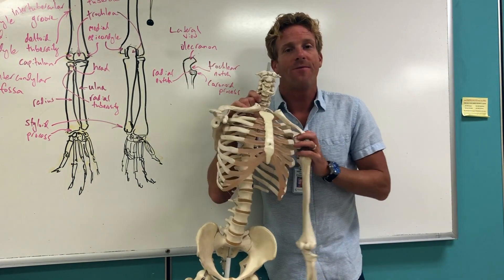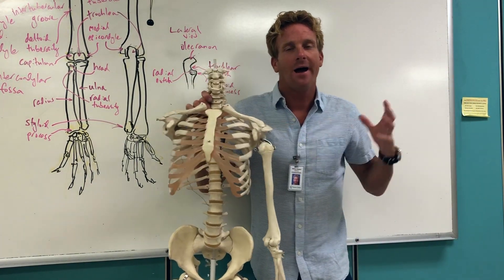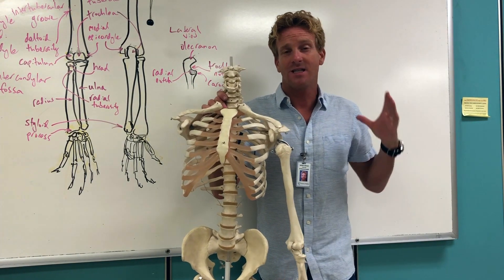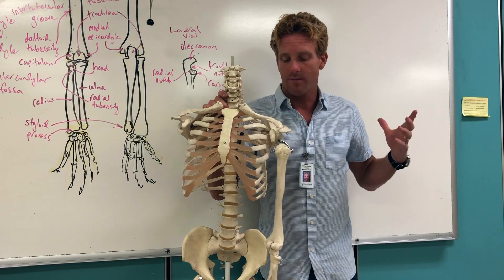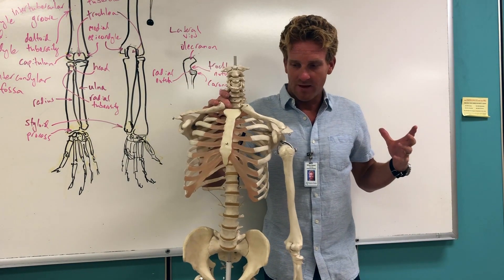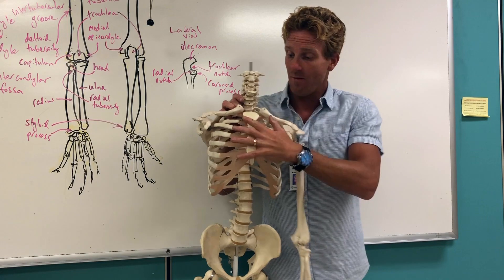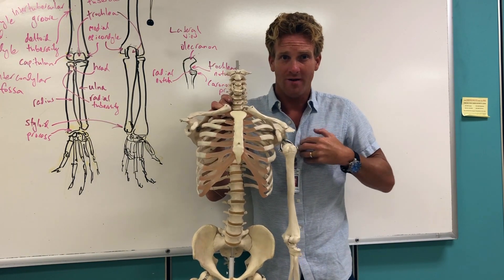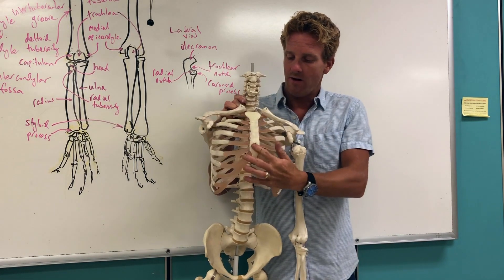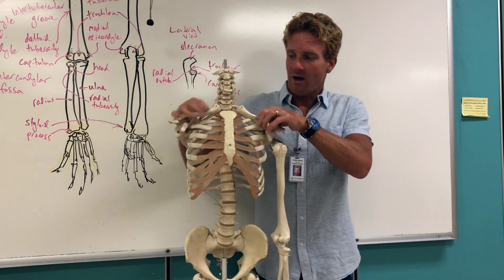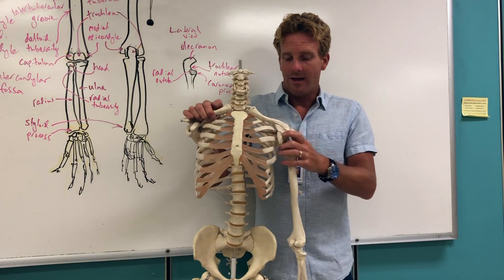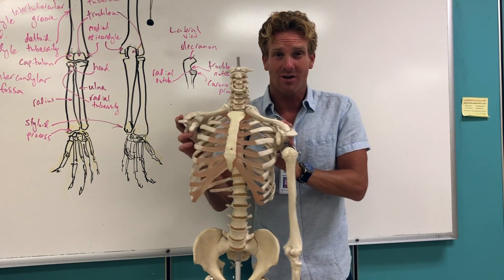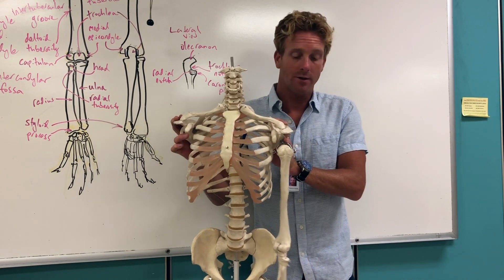Hey everyone. The first thing I encourage you to learn when you start learning the bones of the skeleton is just the names of the major bones of the body. Here I've got a typical skeleton. Starting up here, you'll have the sternum that makes up the breastbone or chest plate. Those are connected to the ribs. The collarbone right here is called the clavicle, which extends out laterally and connects to the shoulder blades, which are called the scapula.